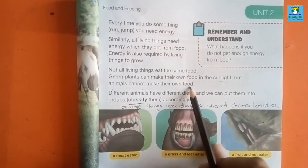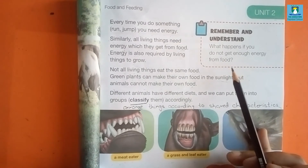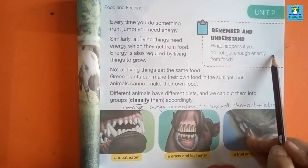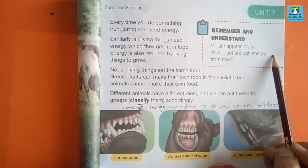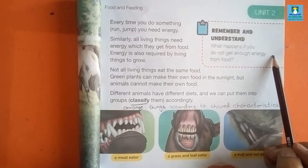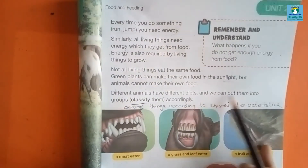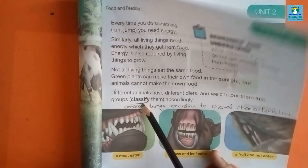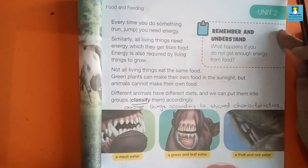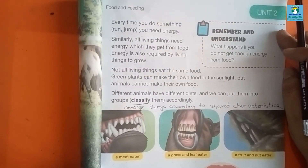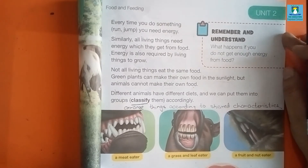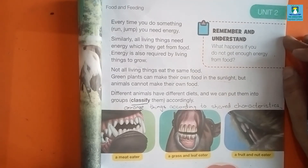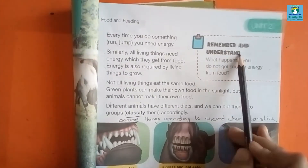Green plants come under living things, but not all living things eat the same food. Different animals have different diets, and we can put them into groups and classify them accordingly. To classify means to arrange things according to shared characteristics. Different animals have different diets and we can classify them into groups.